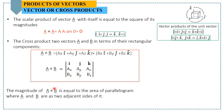The magnitude of a cross b is equal to the area of the parallelogram where a and b are the two adjacent sides of that parallelogram.